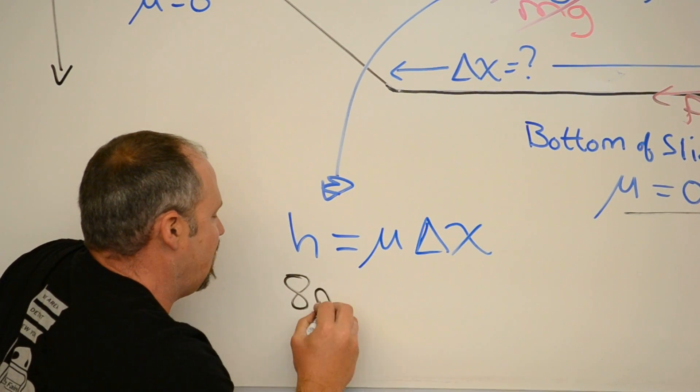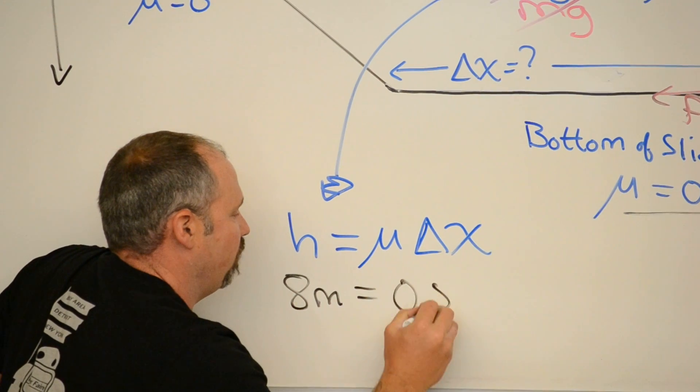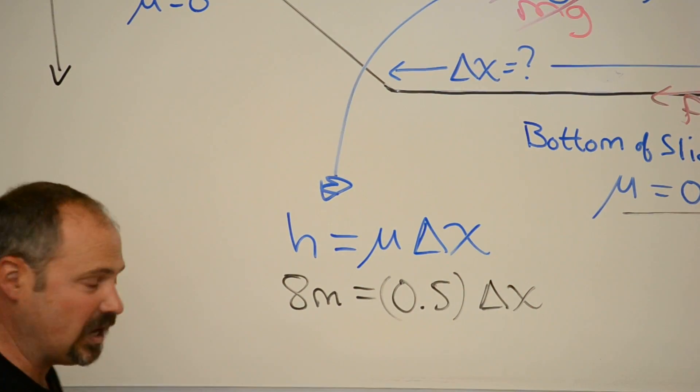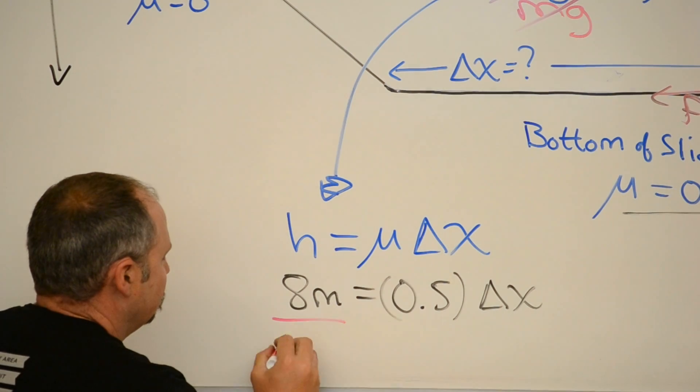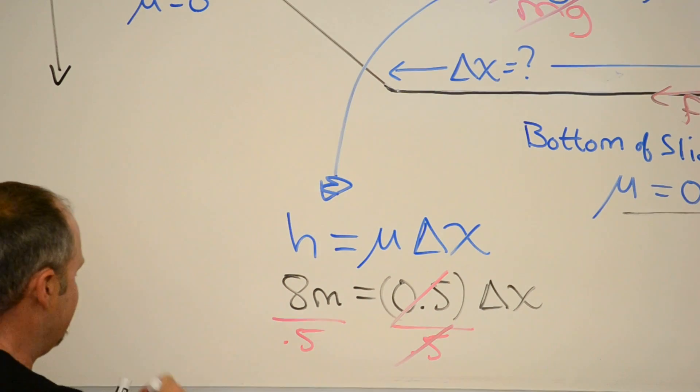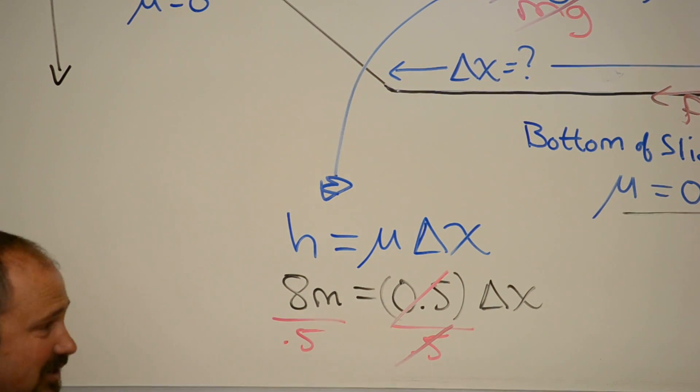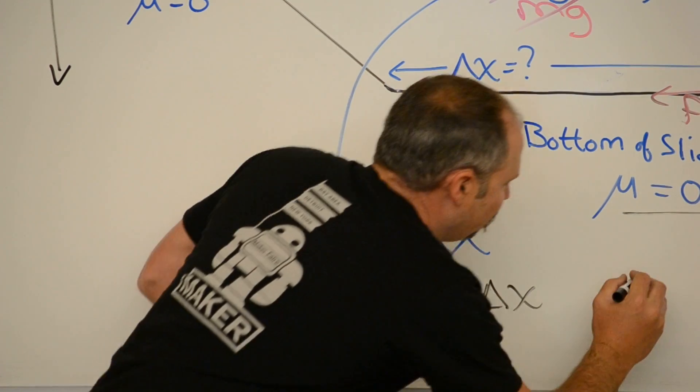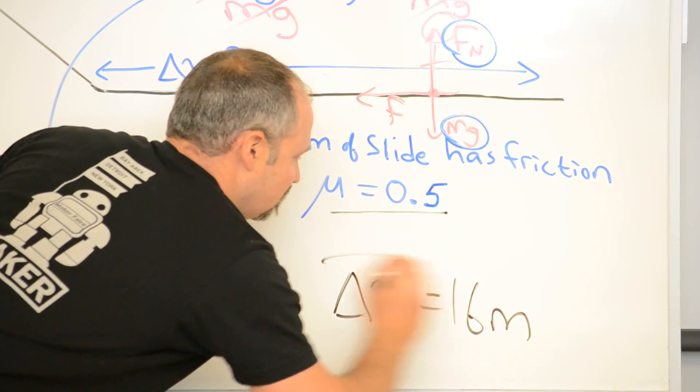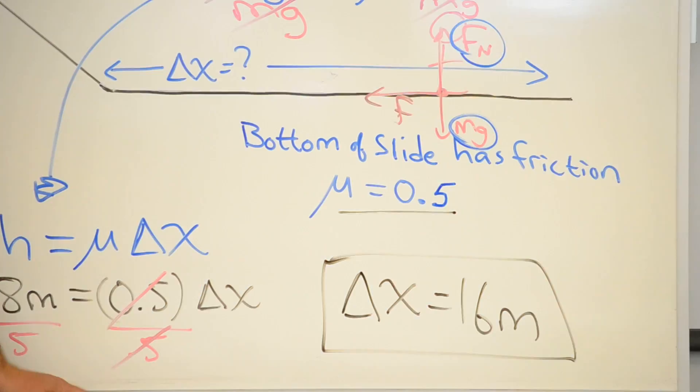The slide is 8 meters high. The coefficient of friction is 0.5. Delta x. Delta x. Divide both sides by 0.5. And 8 divided by 0.5 is 16. We now know that she went a distance of 16 meters before coming to rest.